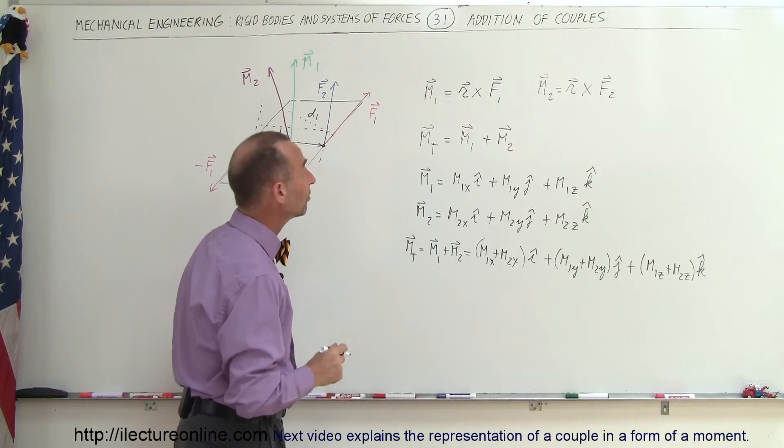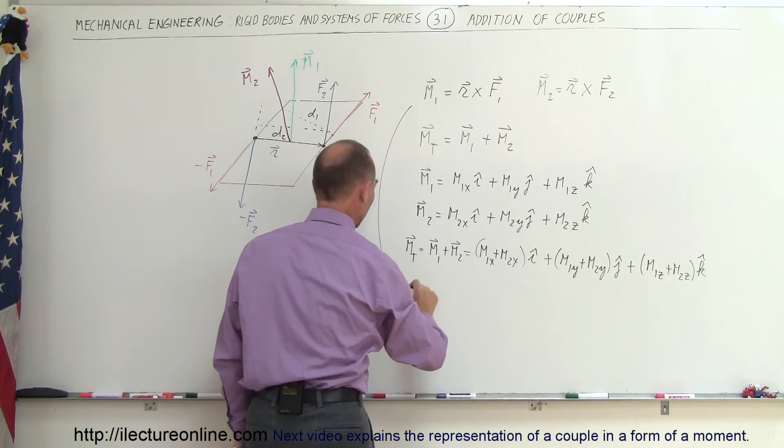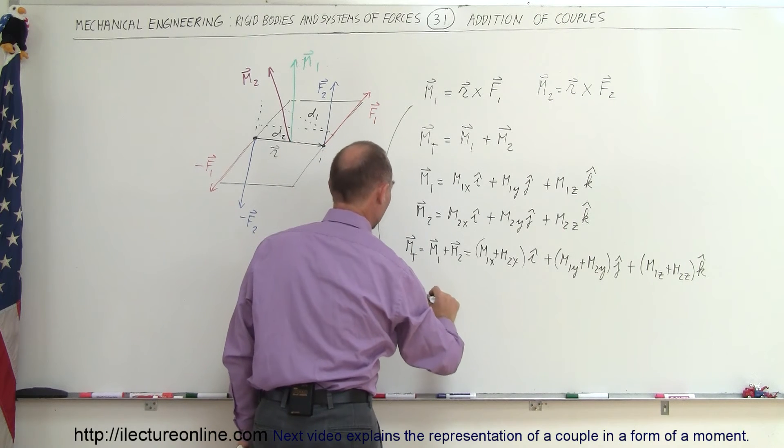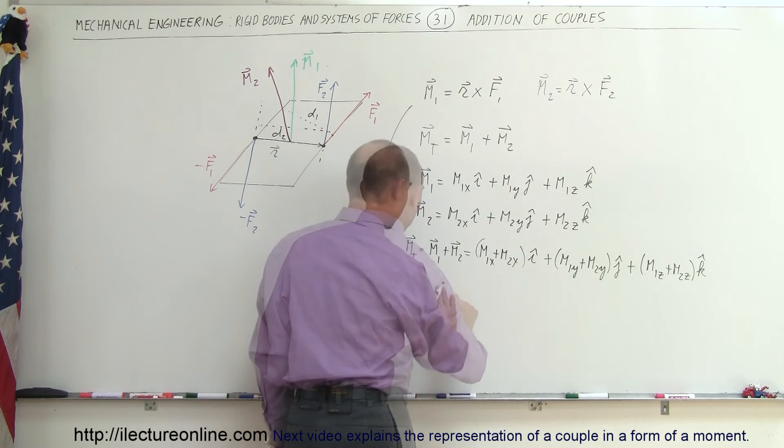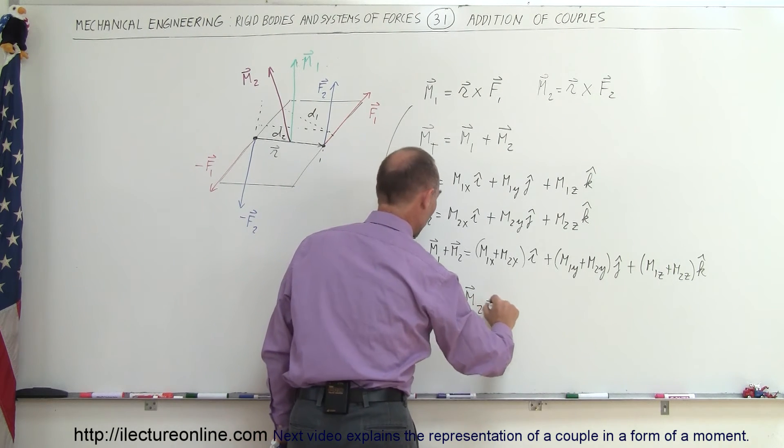Now, another way of looking at it is we can say, we can also write like this. We can say that the total, M total, is equal to M total is equal to M1 plus M2, and of course, M1 can be written as this,